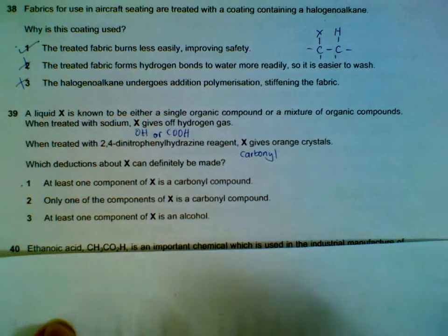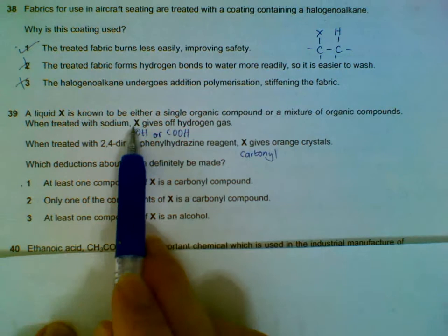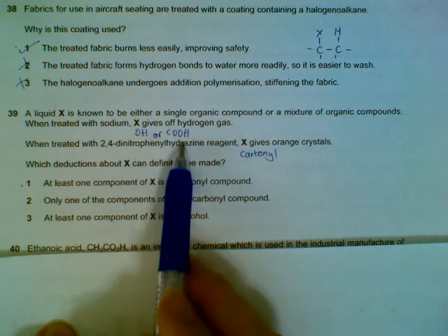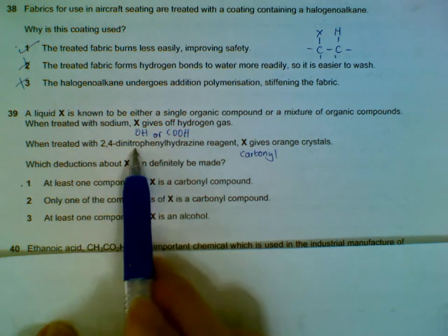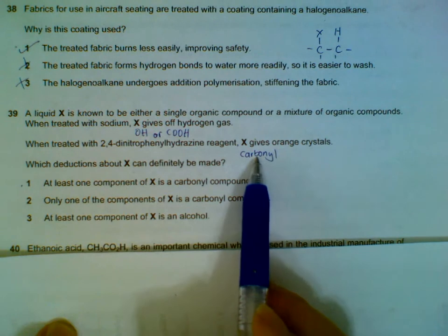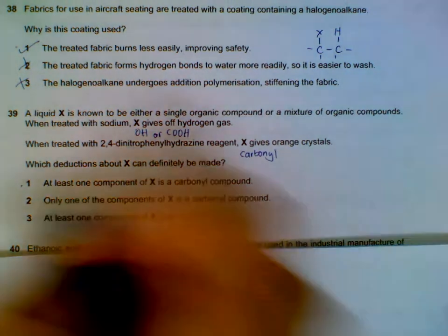Question 39: Liquid X can be a mixture or a single compound. When reacting with sodium, it gives off hydrogen gas - that means it could be alcohol or could be an acid. And then treating with 2,4-DNPH, it gives orange crystals - it could be ketone or aldehyde. But it will be a carbonyl either way. So we are sure that it at least must be carbonyl.